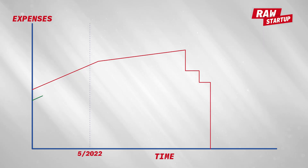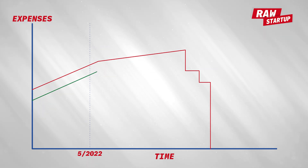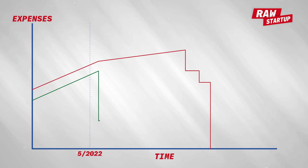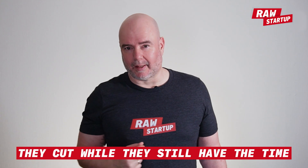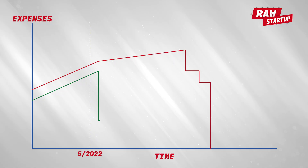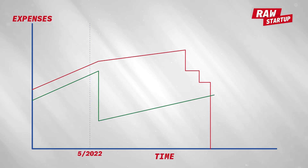Company B, the green line, on the other hand, handles it differently. When they see something is up, they cut hard right away. This is hard and not easy, but sometimes it has to be done. They cut while they still have the time and come out much stronger with a lower cost base. This is the survival of the quickest.